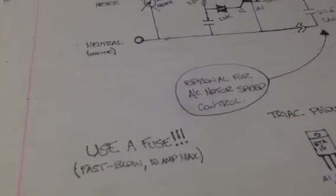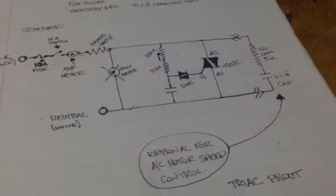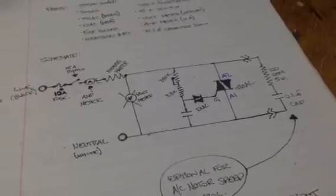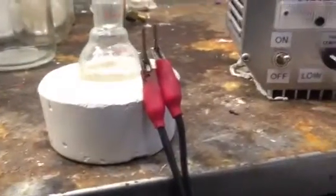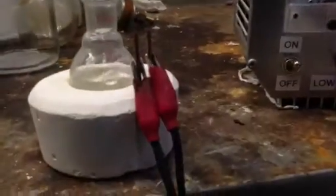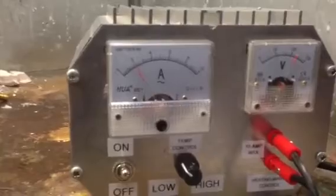Make sure you use a fuse. Always use a fuse. A fast blow 10 amp max in this case here anyway because everything's rated to 15 amps or so. And 10 amps is plenty. 10 amps if I ran through this thing would blow this heating mantle in a minute. As you can see I'm boiling water there at 2 amps.